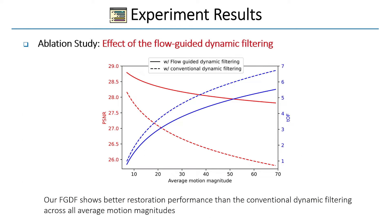We compared the performance between our proposed flow-guided dynamic filtering and conventional dynamic filtering. This figure shows the performance of the restoration network based on the two dynamic filtering methods. It can be observed that our flow-guided dynamic filtering demonstrates better reconstruction and restoration performance compared to conventional dynamic filtering across all motion magnitude ranges. Furthermore, this trend becomes more pronounced as the motion magnitude increases.